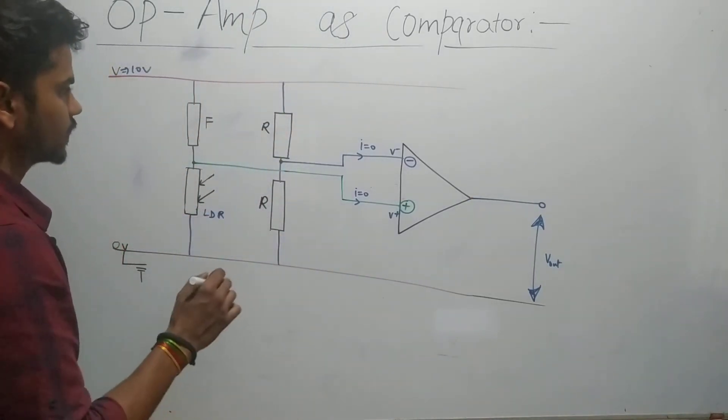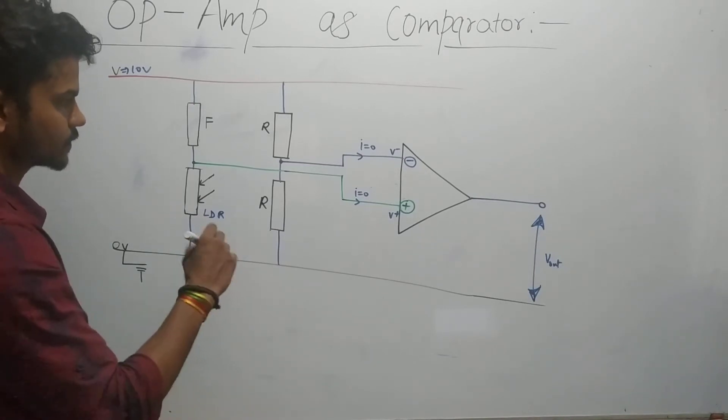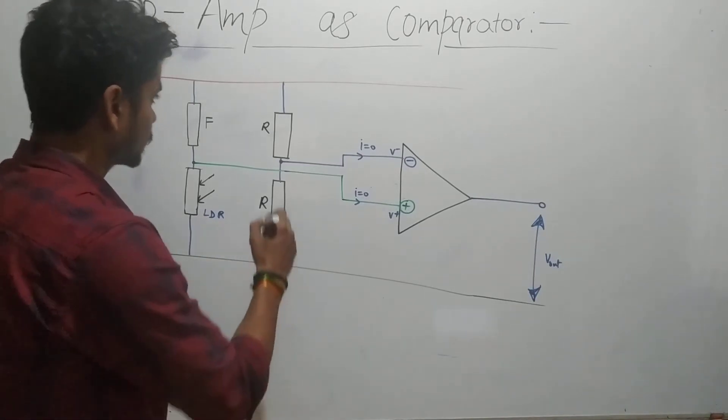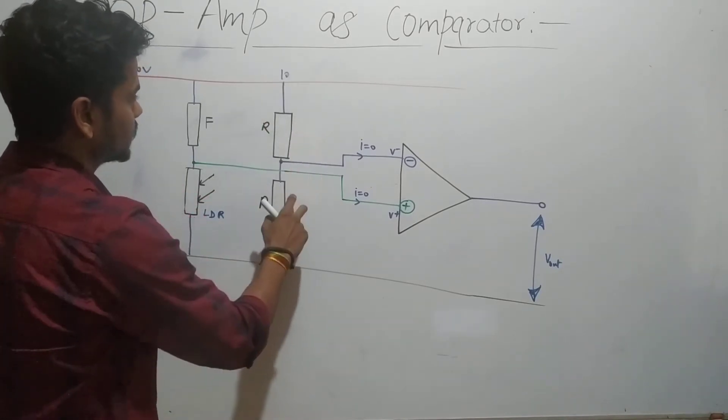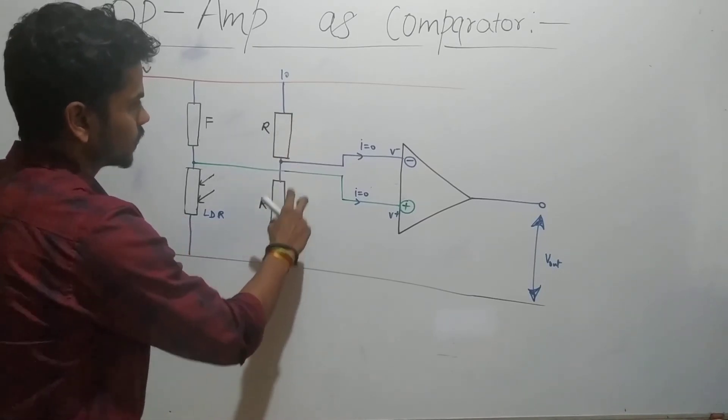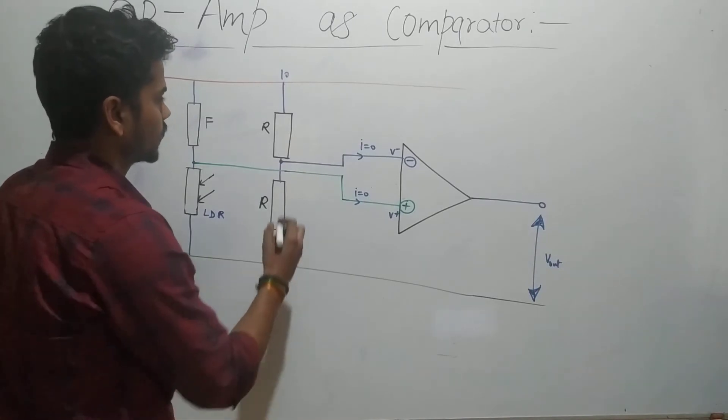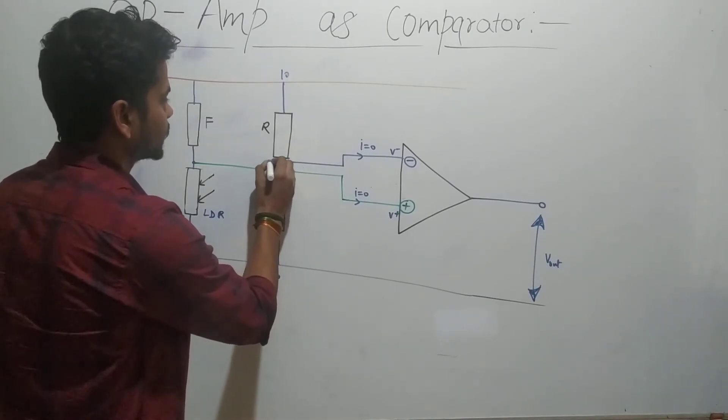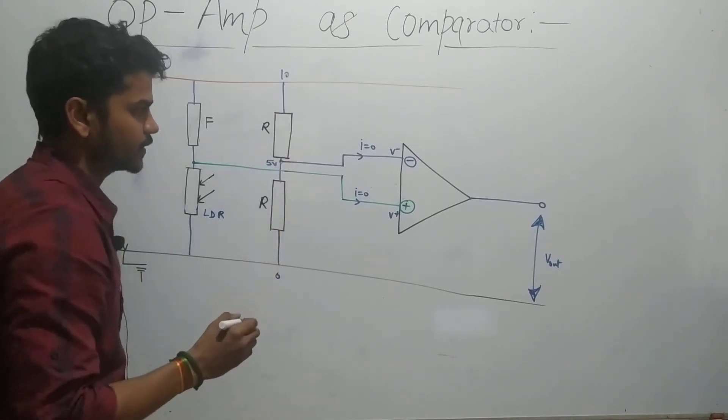Based on that, let's figure out the voltage across each point. This is 10 volts, this is zero. You can clearly see that this resistance and this resistance are equal, so the voltage divider is equal because there is no current passing through. So the voltage here would be 5 volts. We need to find the voltage at this point.